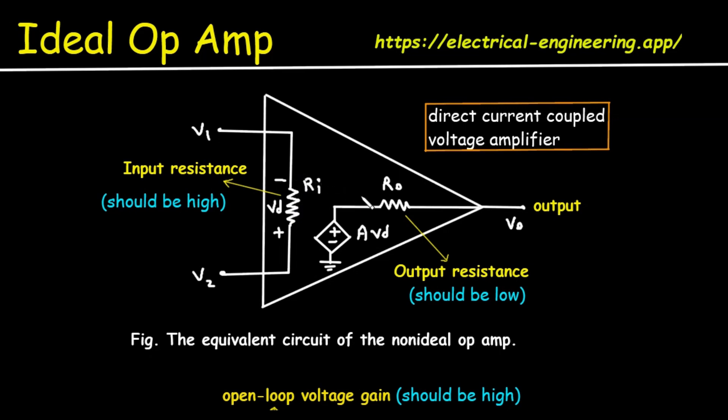Now we will see the amplification stage AVD. Here this A represents gain. This diamond shape represents a voltage controlled voltage source. Its value is A into VD. Here, A is the open loop gain and VD is the differential input voltage we just discussed. This is the heart of the Op Amp—it's the part that does actual amplification.